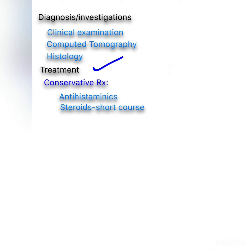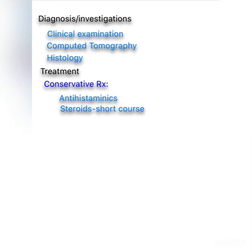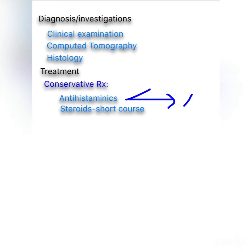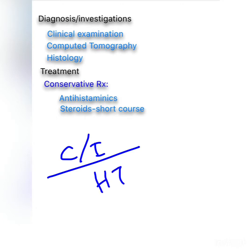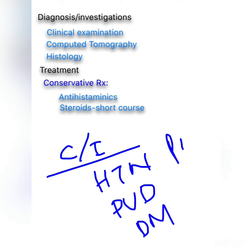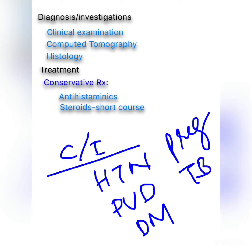Treatment includes both conservative and surgical approaches. Conservative treatment: antihistamines for early polypoid changes. If that fails, steroids are given as a short course — in spray form such as budesonide, beclomethasone, etc. Contraindications to steroid use include hypertension, peptic ulcer disease, diabetes mellitus, pregnancy, and tuberculosis.